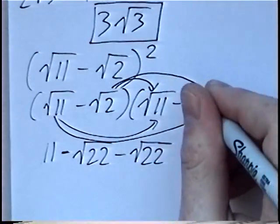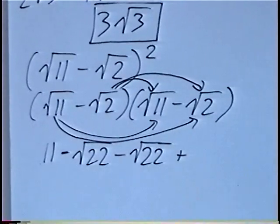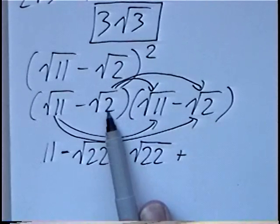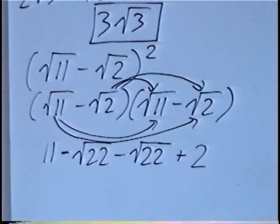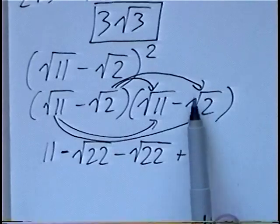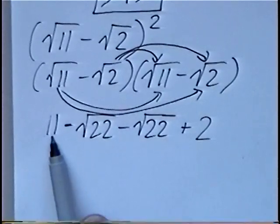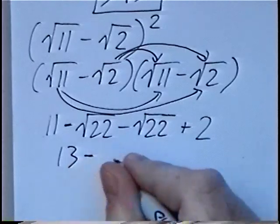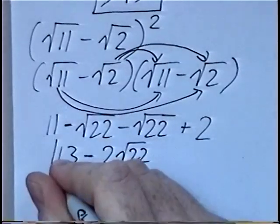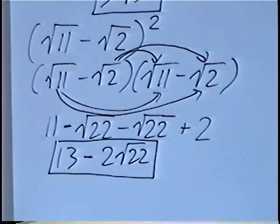Multiplying the last terms: negative radical 2 times negative radical 2. Negative times negative is positive, and multiplying the inside numbers — 2 times 2 is 4. Taking the square root of 4 gives 2, since multiplying two radicals with the same number cancels the radical. Combining like terms: 11 plus 2 is 13; minus radical 22 minus another radical 22 is minus 2 radical 22. The final answer is 13 minus 2 radical 22.